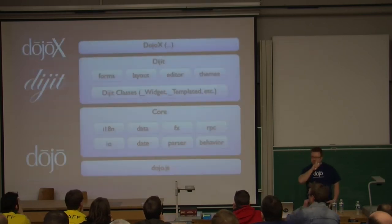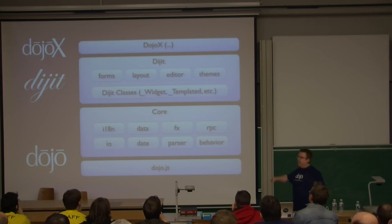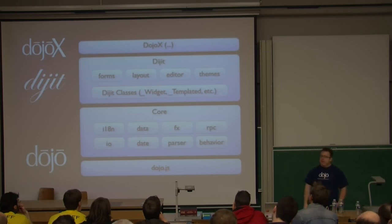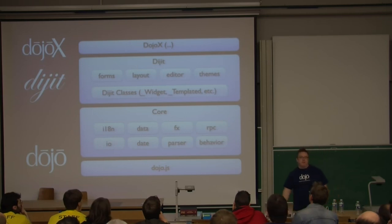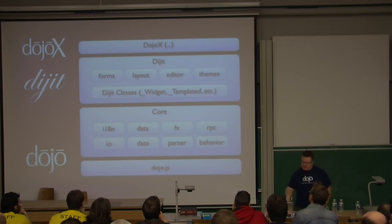Dojo today is split up into a few levels. Dojo and Dijit are stable APIs — not going to change for major releases except for additions and bug fixes. DojoX is the official extensions of the Dojo toolkit. Dojo.js gzipped gives you pretty much everything you need to build a basic application in 26K, and then you can add on any other libraries you want. Dijit is both a widget system and a collection of widgets.